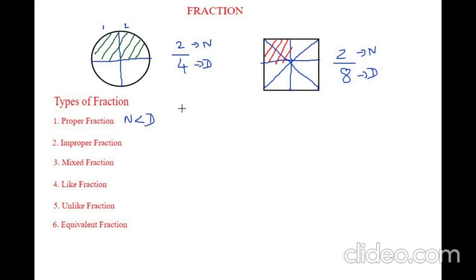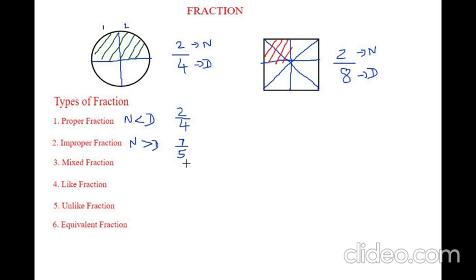For example, we can write 7 by 5. Here the numerator is bigger and the denominator is smaller. So this is called an improper fraction.